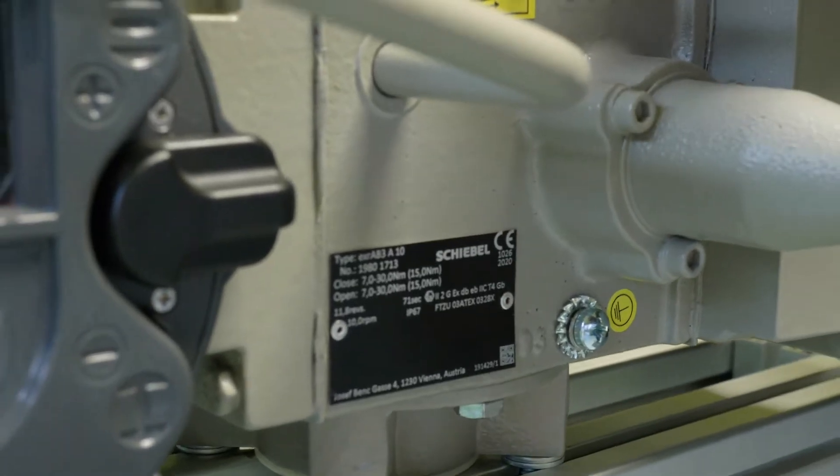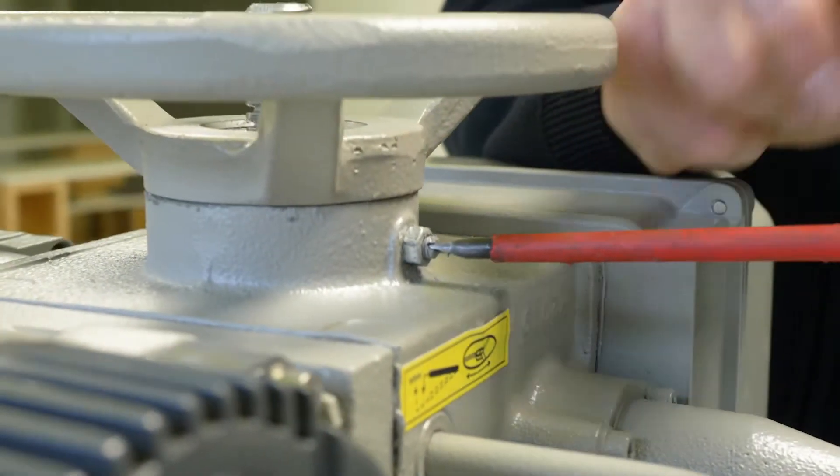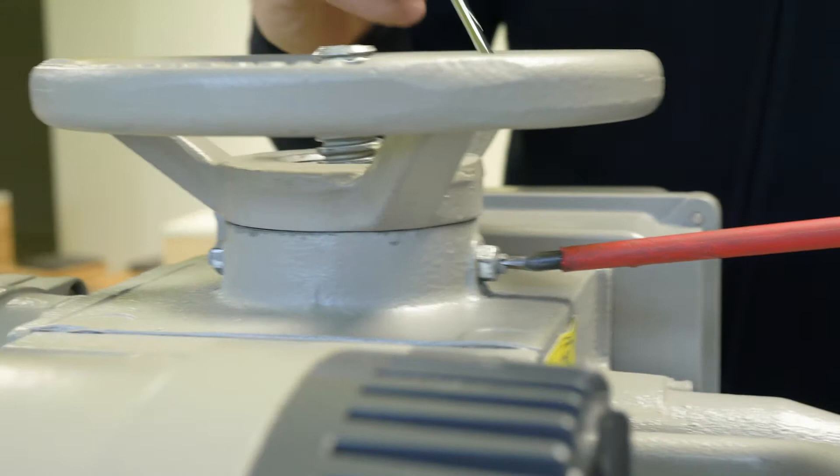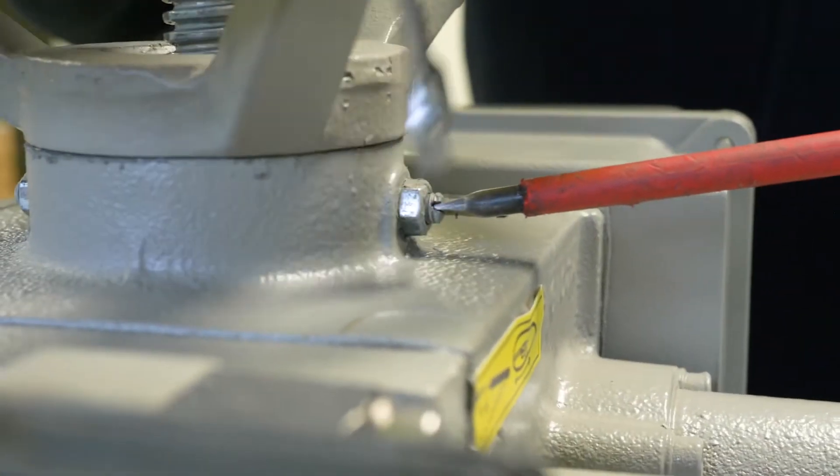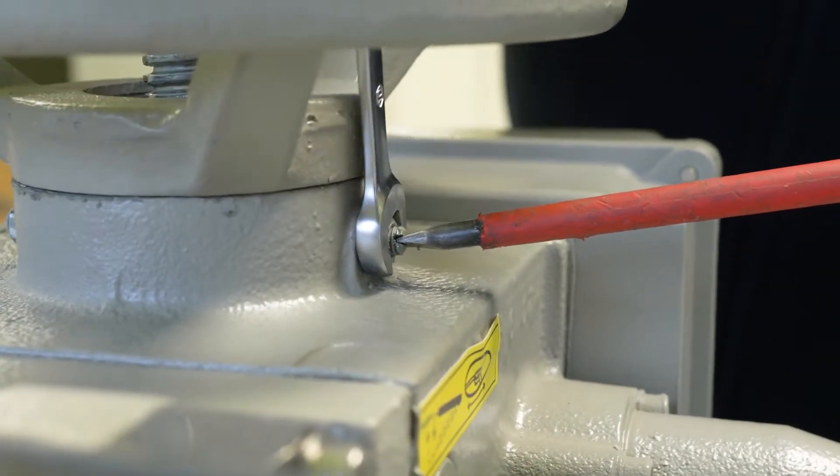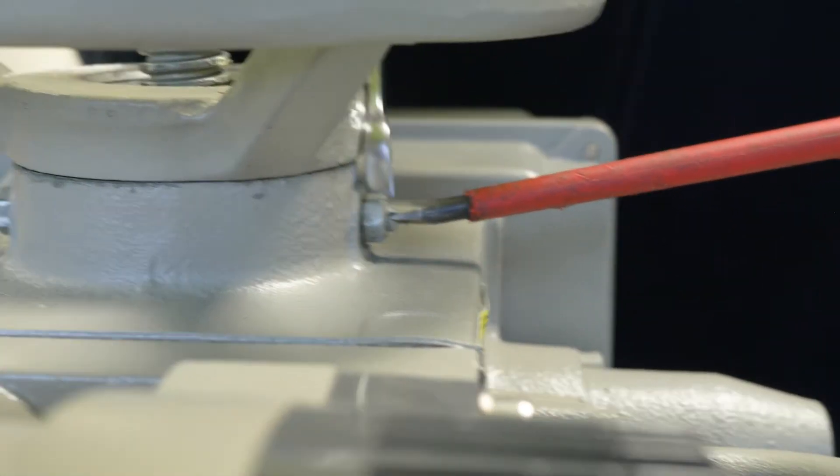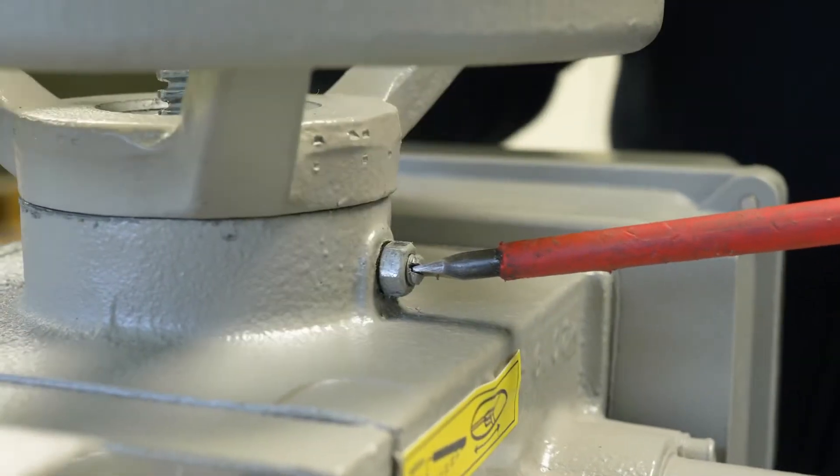Therefore we have to loosen these two worm screws with the counter nut. So we loosen the nut and then we can loosen this worm screw.